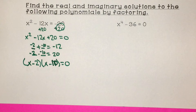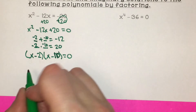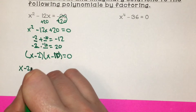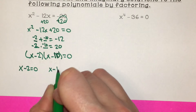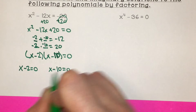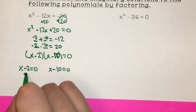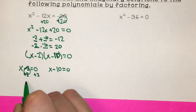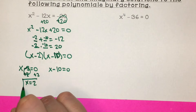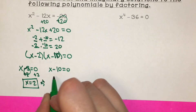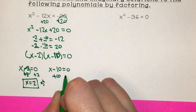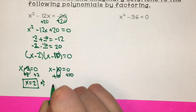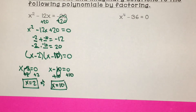Now we're going to solve for each x value. x minus 2 equals 0 and x minus 10 equals 0. For the first, add 2 to both sides to get x equals 2. For the other, add 10 to both sides to get x equals 10. So this was the easier kind of polynomial to factor.